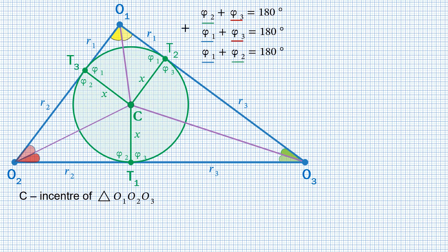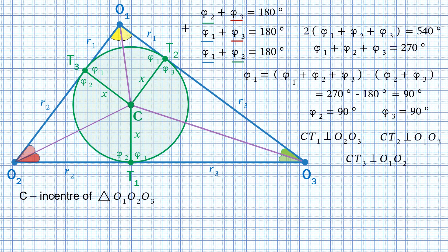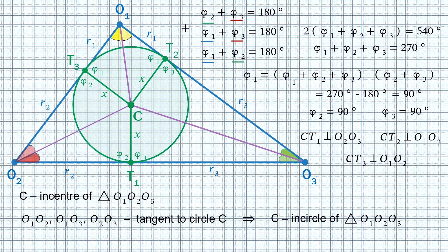Each angle appears exactly twice in the three equations. Therefore, adding all three equations gives 2 times the sum of all angles equals 540 degrees, so the sum of all angles equals 270 degrees. We can then find that φ1 equals 90 degrees, and the same holds for φ2 and φ3. This means that the radii CT1, CT2 and CT3 are perpendicular to the corresponding sides of triangle O1O2O3. Therefore all sides of the triangle are tangent to the green circle, which means the green circle is the in-circle of triangle O1O2O3.